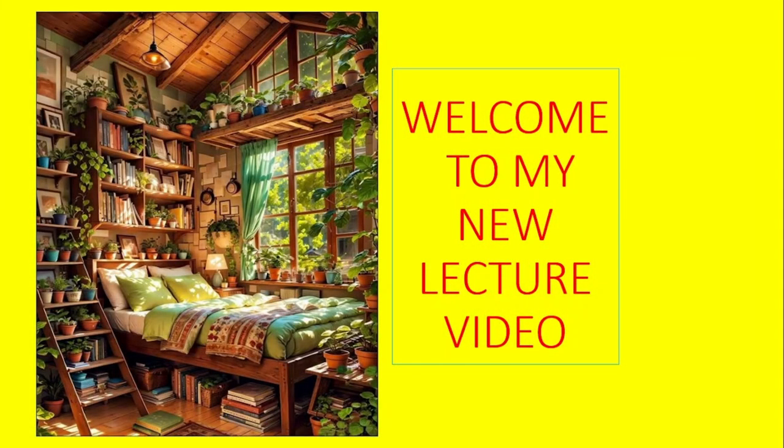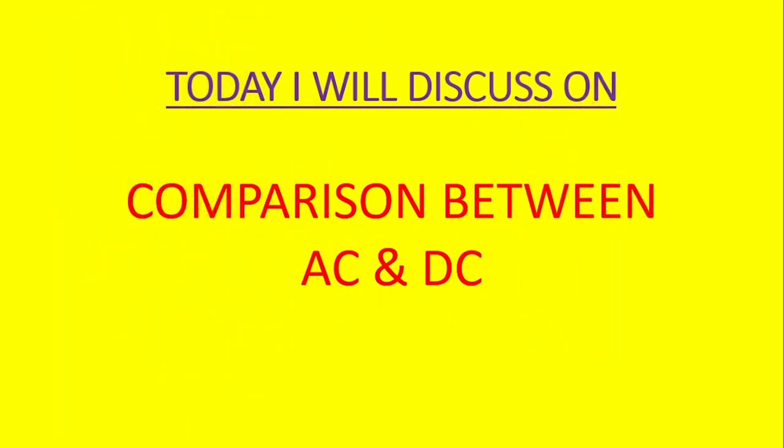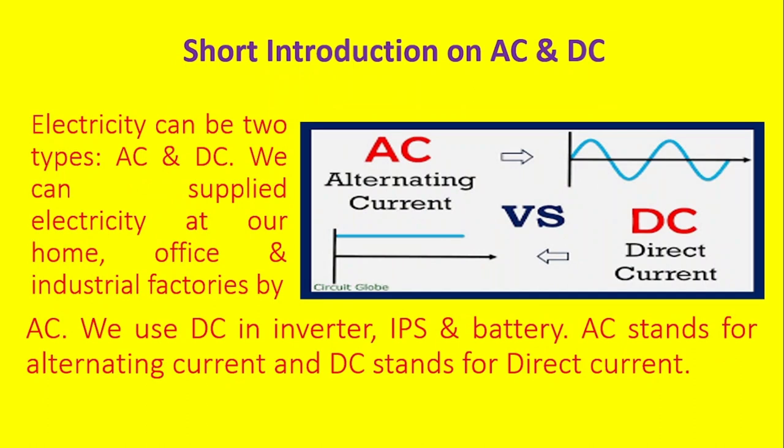Welcome to my new lecture video. Today I will discuss a comparison between AC and DC. Short introduction: electricity can be two types, AC and DC. We can supply electricity at our home, office, and industrial factories by AC.